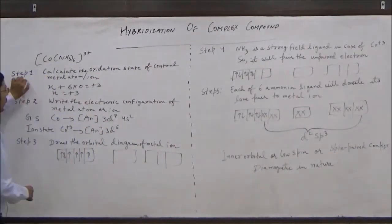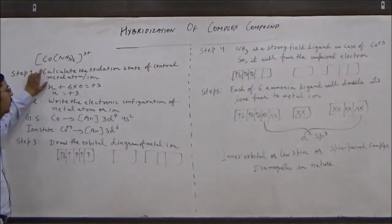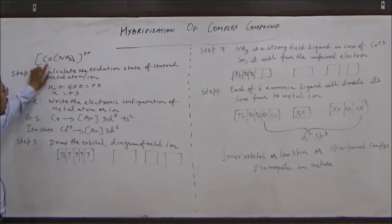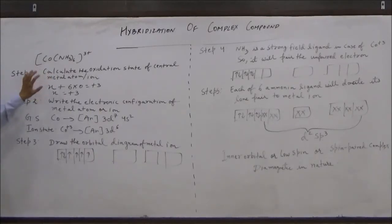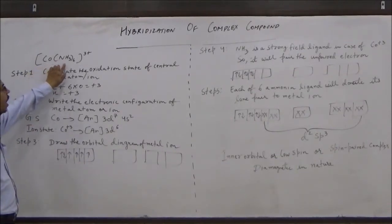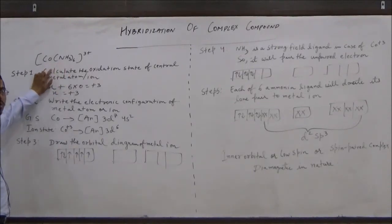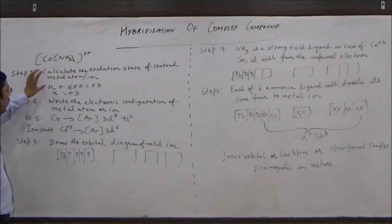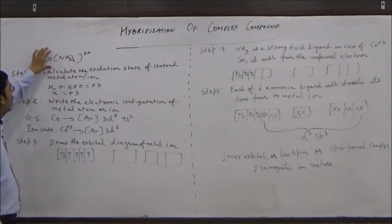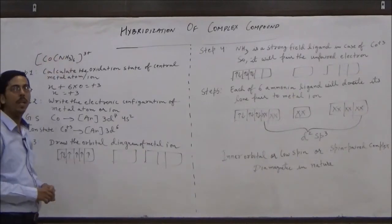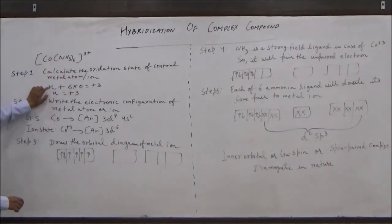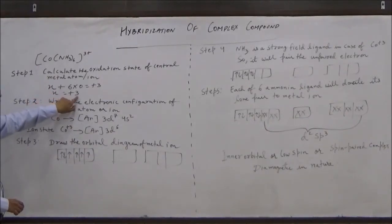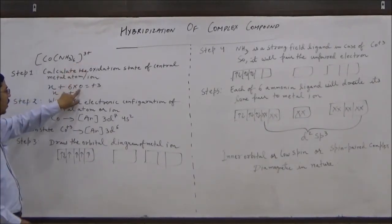The first step is to calculate the oxidation state of the central metal atom or ion. In this case, the central metal ion is cobalt 3+. We calculate its oxidation state by following a few rules. We assume the oxidation state of cobalt to be x. We know that ammonia is a neutral molecule, so the net charge of ammonia is zero. The sum of oxidation states of all atoms equals the net charge of the complex ion, so the oxidation state of cobalt comes out to be +3, since the net charge is +3 and oxidation state of ammonia is zero.